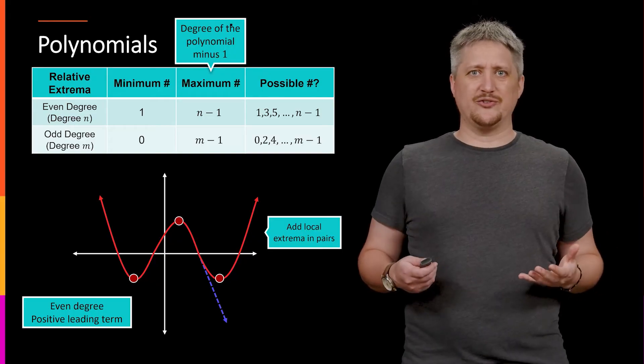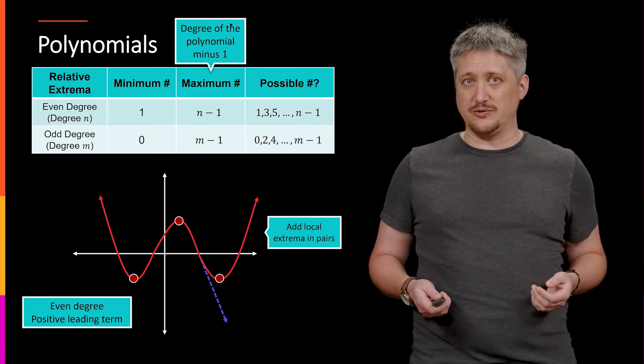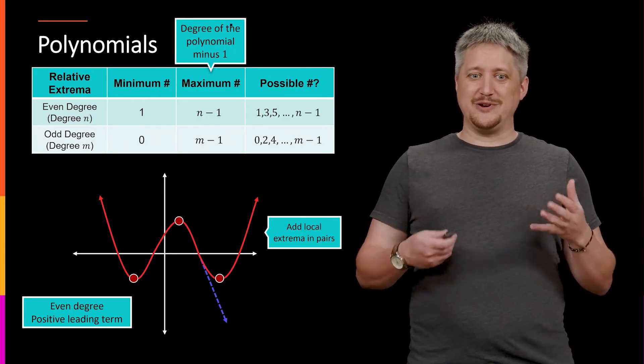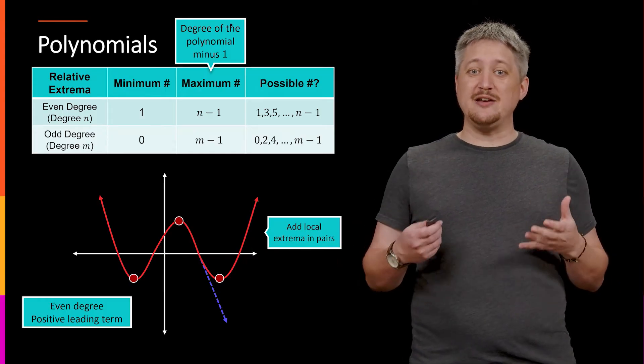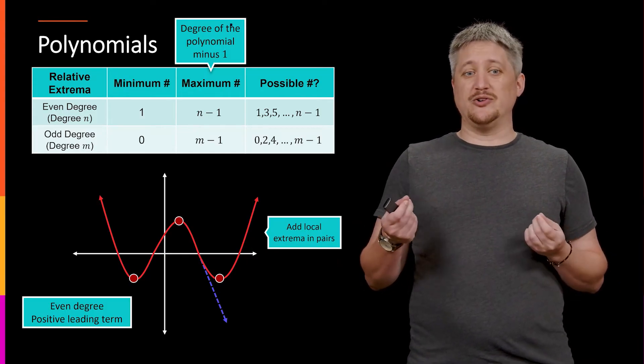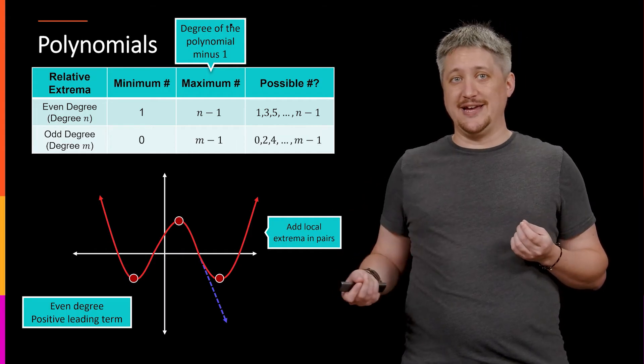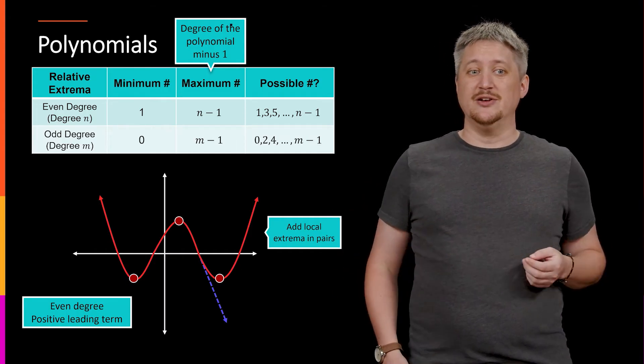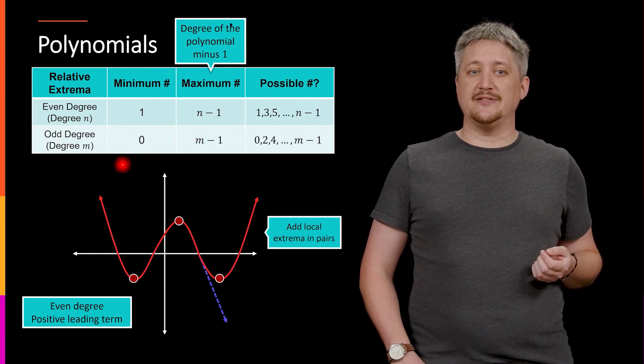And it turns out the same thing is true for the same reason. You can sort of go through it as a way of convincing yourself, but it's same sort of problem where if I only turn once, I'm the wrong degree. So I have to turn again, which means they get added in pairs. Only now, since odd degree has a minimum of zero,